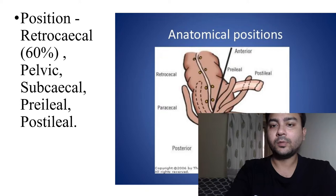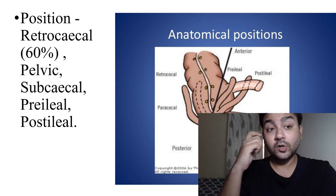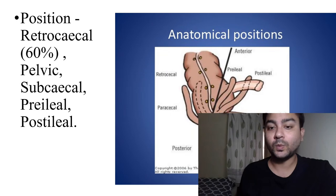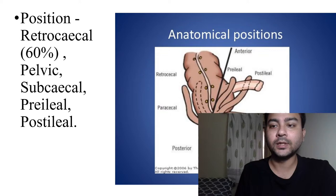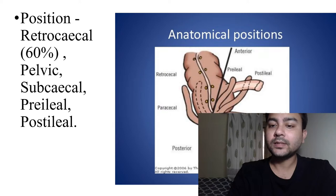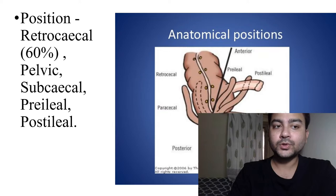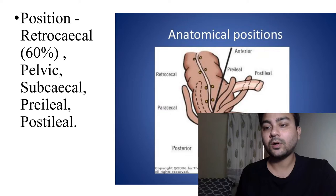First I would like to discuss the anatomical position of the appendix, because a few questions have been asked related to this. The most common position is retrocecal — 60% of appendices are retrocecal. About 30% are pelvic in position. The rest are less common: pre-ileal, post-ileal, sub-cecal, para-cecal, and sub-ileal. Remember: retrocecal is most common, pelvic is second most common — this has been asked in exams.